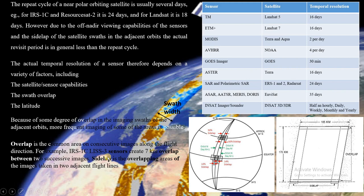Overlap is the common area on consecutive images along the satellite direction. If there is a common area from one to the next consecutive images along the side of the image, we call it sidelap, as you can see in this image. Overlap refers to the common area on the top or bottom between two consecutive images; if it is on the side of the image we call it sidelap.